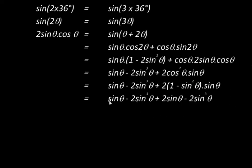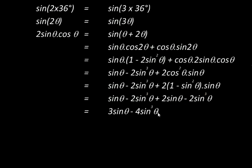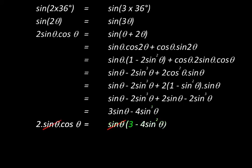We collect like terms — the sine cubed θ terms and the sine θ terms — so 3 sine θ minus 4 sine cubed θ is the expansion of the right-hand side. From this expression, sine θ can be taken out as a common factor, giving sine θ times (3 minus 4 sine squared θ). Since sine θ appears on both sides, we can cancel it.